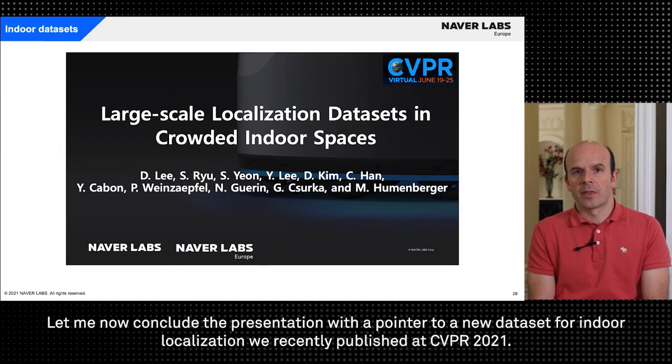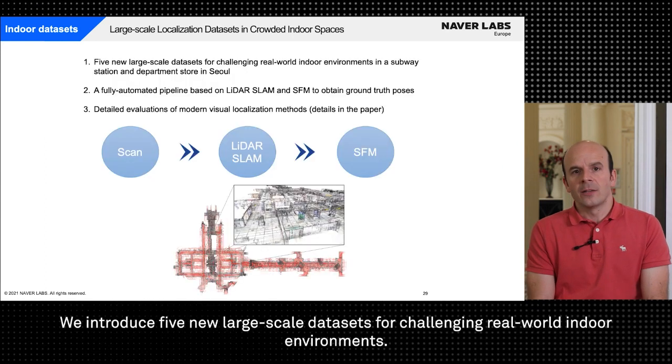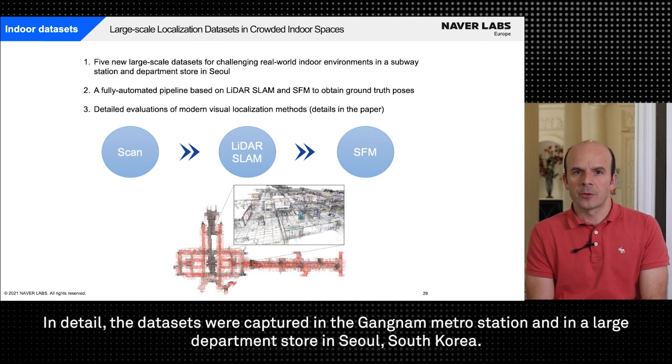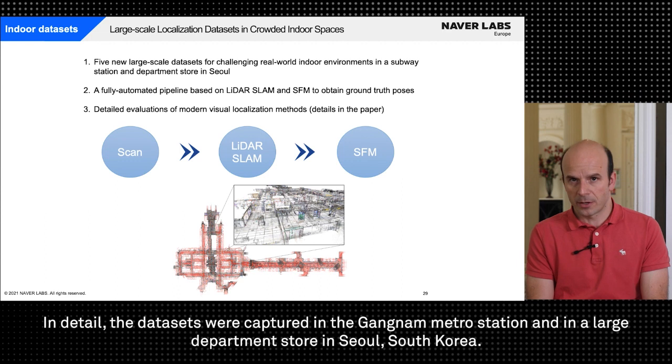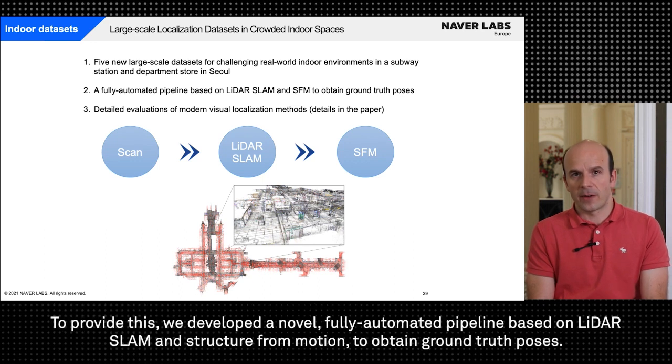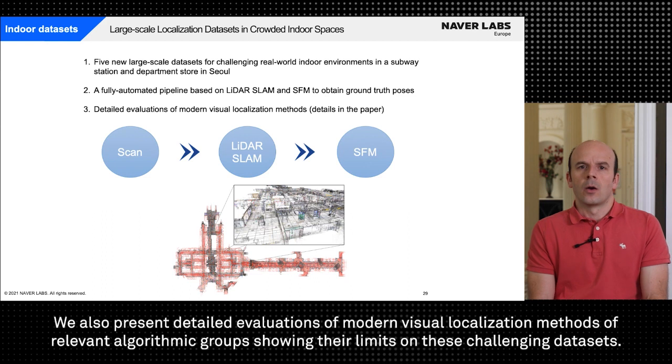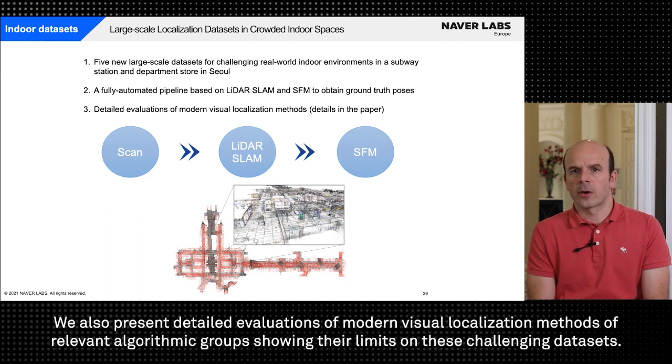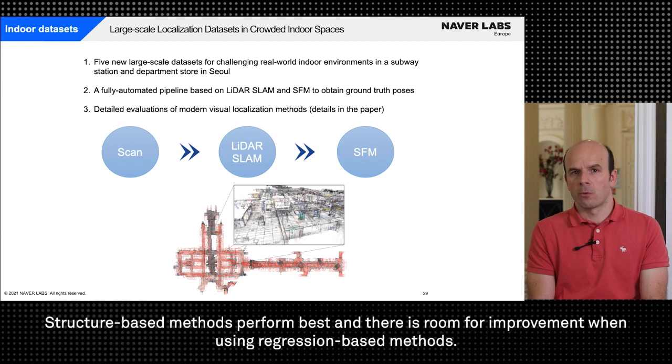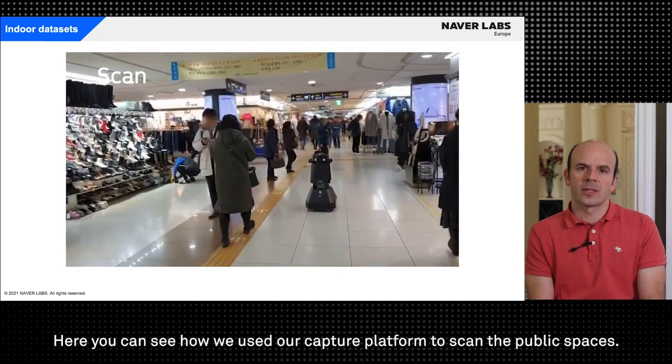Let me now conclude the presentation with a pointer to a new dataset for indoor localization we recently published at CVPR 2021. We introduced five new large-scale datasets for challenging real-world indoor environments. In detail the datasets were captured in the Gangnam metro station and in a large department store in Seoul, South Korea. The proposed datasets provide dense image sampling with ground truth poses as well as accurate 3D models. To provide this we developed a novel fully automated pipeline based on LIDAR SLAM and structure from motion to obtain ground truth poses. We also present detailed evaluations of modern visual localization methods of relevant algorithmic groups showing their limits on these challenging datasets. Structure-based methods perform best and there is room for improvement when using regression-based methods.